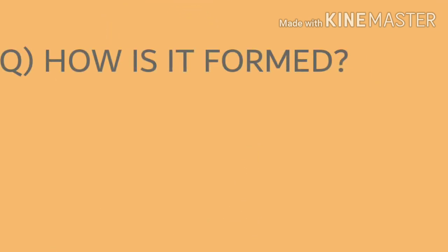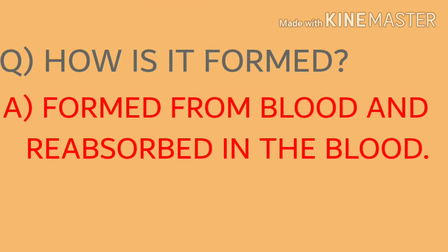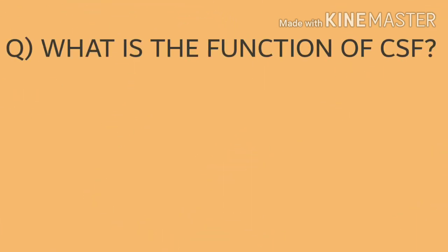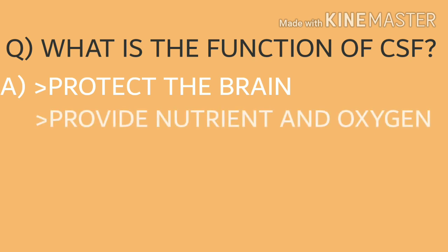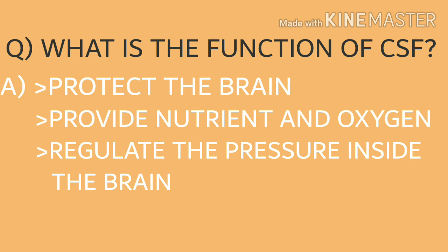How is cerebrospinal fluid formed? It is formed from blood and reabsorbed into the blood. What is the function of cerebrospinal fluid? There are three functions: protect the brain, provide nutrients and oxygen to the tissues of the brain, and regulate the pressure inside the brain.